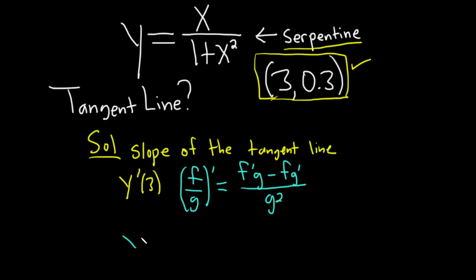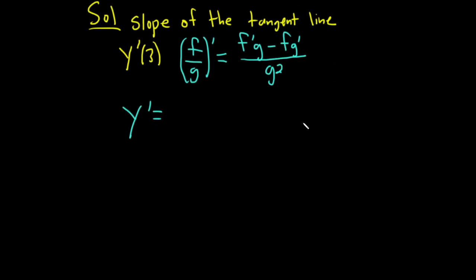So y prime is going to be—I'm going to write it again over here so we can see it—it's x over (1 + x²). That's our function. The derivative of the top is 1 times the bottom, so (1 + x²), that's the g.